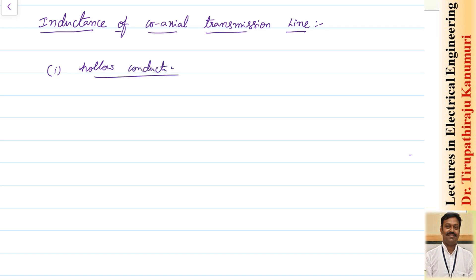Let us take the transmission line like this. It has a hollow conductor — inside nothing will be there — the entire current passes through the surface having a radius of A. The outer conductor is at a distance B from the center and has a very thin layer; let us assume the thickness is very small to make the calculations easy.